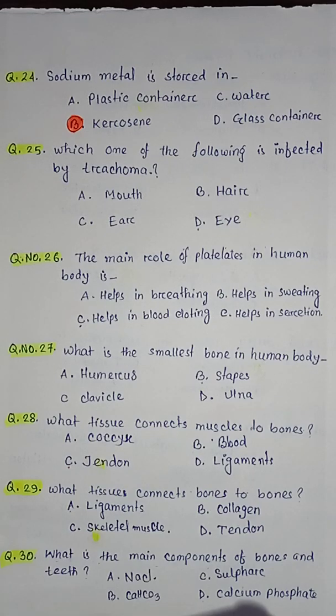Question number twenty-five: which one of the following is infected by trachoma — option A mouth, option B ear, option C hair, option D eye. So the correct answer is option D eye.